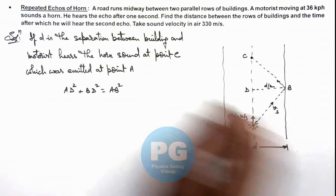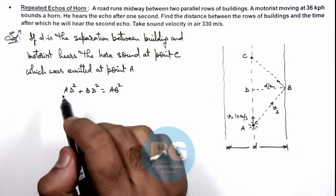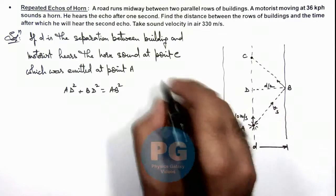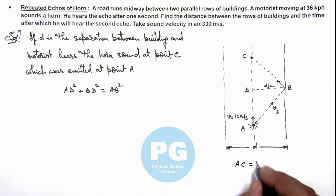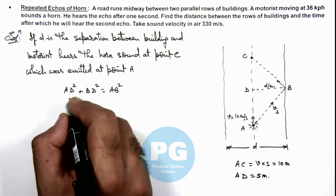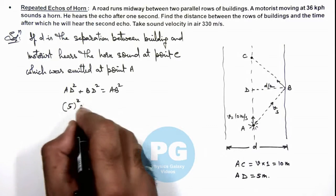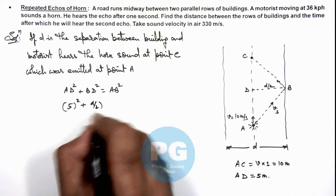So here we are given that here the echo after one second, that means the distance traveled by the motorist from A to C, here we can write AC should be equal to 5 meters. If we substitute it over here, this 5² plus BD is d/2 whole squared.